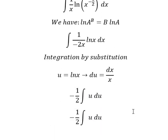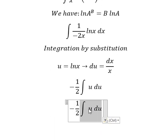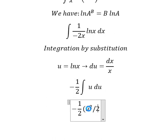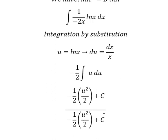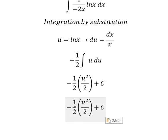The integral of u gives us u²/2, and we add the constant C. Simplifying, we get -1/4 times (ln(x))² plus C.